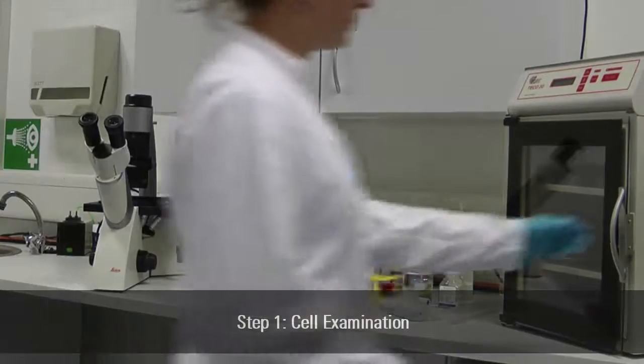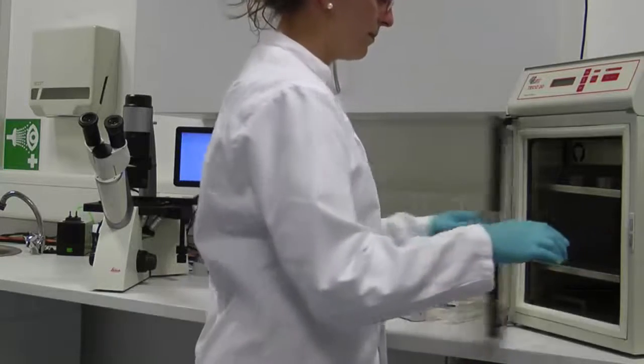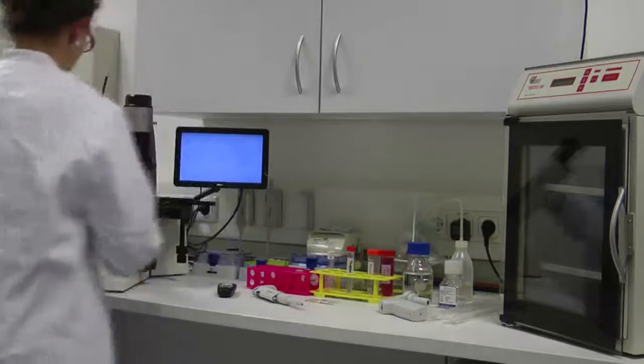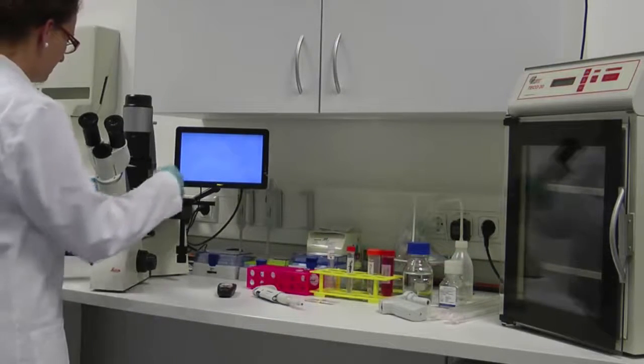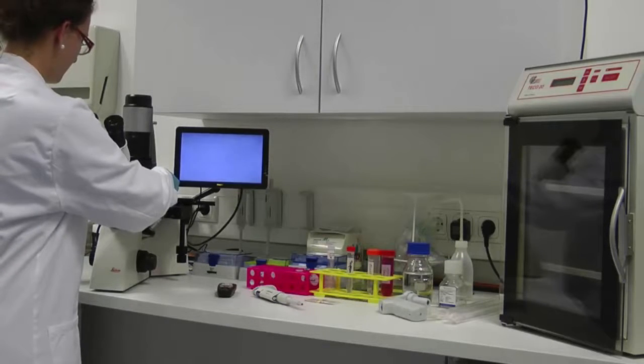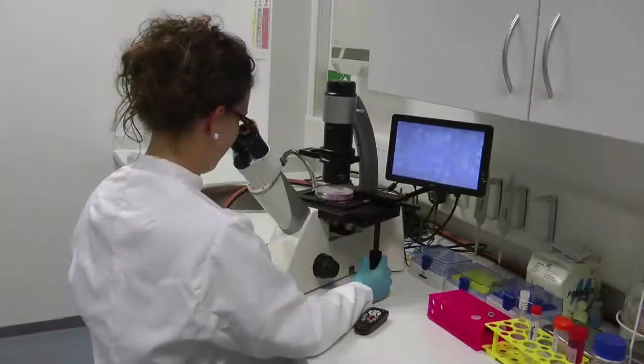Take cells out of the incubator and put them under the microscope for quick cell check. Cells should be checked microscopically every day to ensure they are healthy, that means no contamination and only a few dead cells and growing as expected. Cells should be mainly attached to the bottom of the dish or flask and the media should be pink-orange in color.